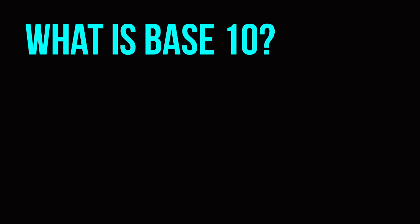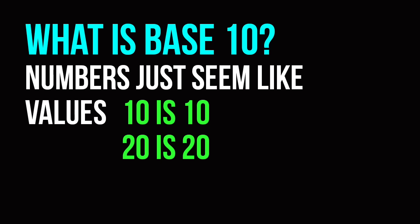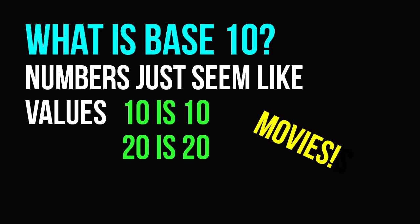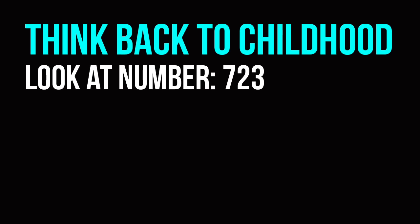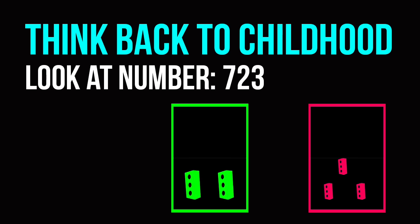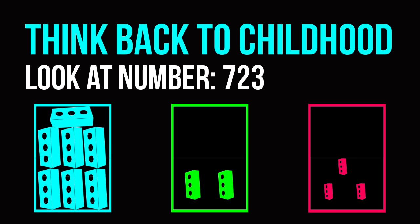So what does base 10 really mean? As an adult, you look at numbers like numbers — you see 10, it means 10. But do you remember a time where you didn't know that? Think back to elementary school. You looked at a number like 723, put three blocks in the ones column, two bigger blocks in the tens column, and seven huge blocks in the hundreds column, and that's how you came up with 723. You didn't really know what it meant yet — you just knew there was a ones, tens, and hundreds column.